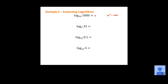A shortcut here: because 1,000 is 1 with three zeros, 10 to the third power gives us that. So 10 to the third power equals 1,000; therefore x equals 3, and the base 10 log of 1,000 is equal to 3.